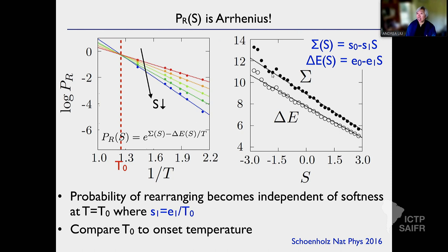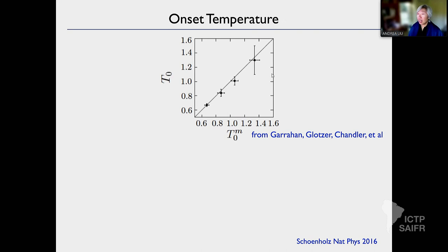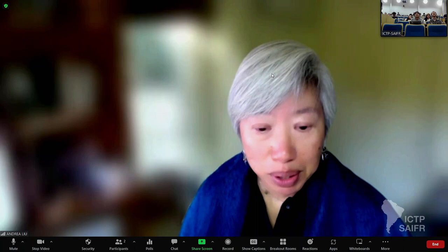We're going to say: suppose we know that delta E, the entropy and energy barriers associated — hold on, let me get the right thing here. Why am I not getting the spotlight? It's doing a spotlight over here. Are you seeing the right screen? We are seeing onset temperature. I need to swap the screens here. Now you're seeing the wrong thing. We see two slides, the same two — hold on, let me stop this and show it to the proper screen. Sorry about that.